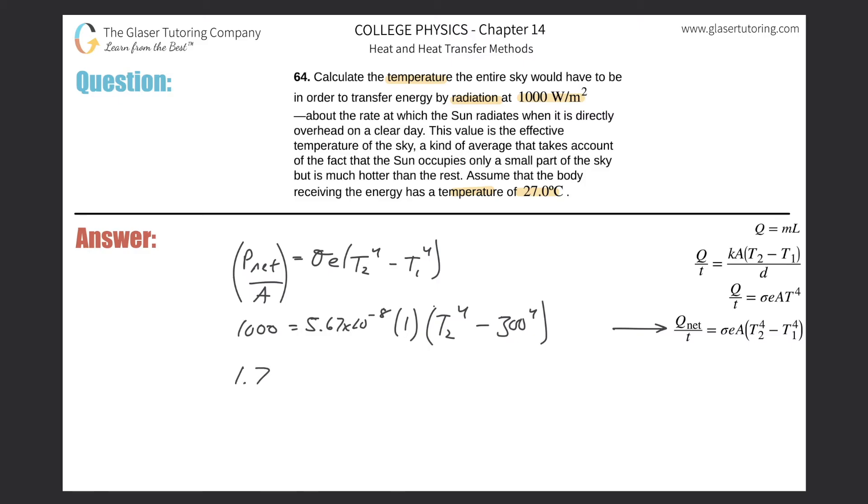This will equal T₂ raised to the fourth minus 300 raised to the fourth. Add 300 raised to the fourth to both sides, so now I get 2.57 times 10 to the 10th equals T₂ raised to the fourth.